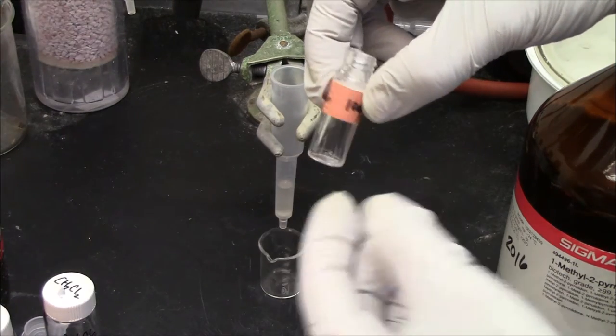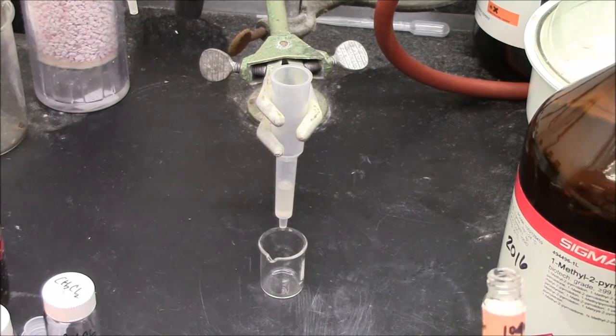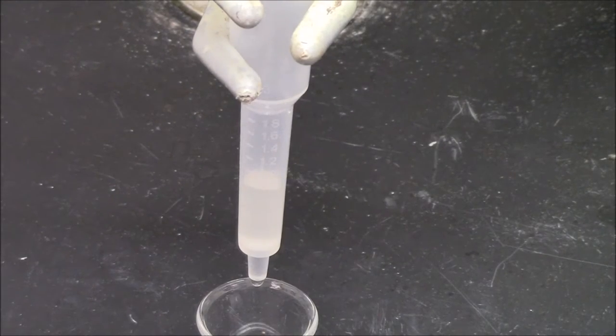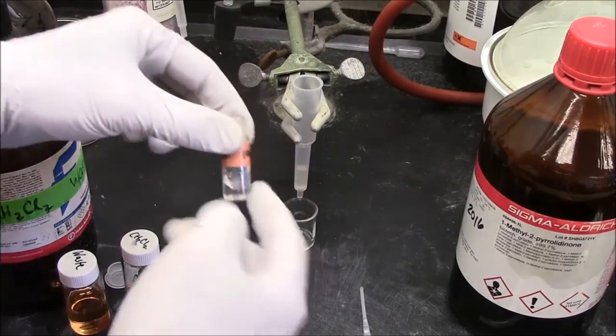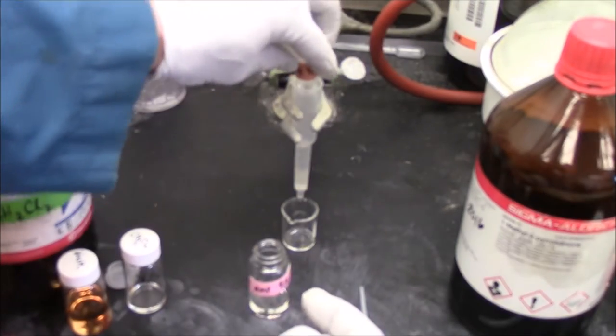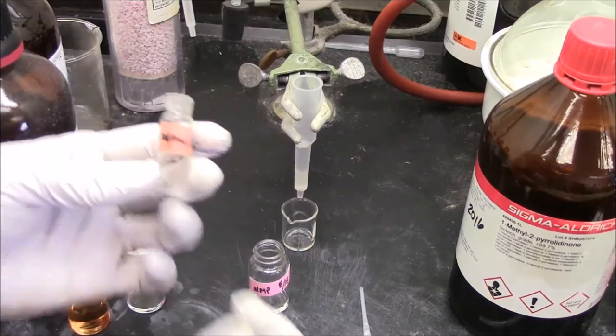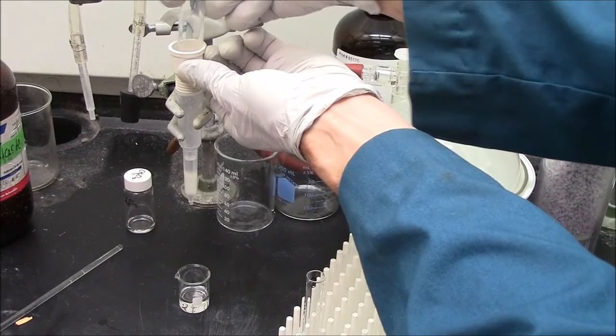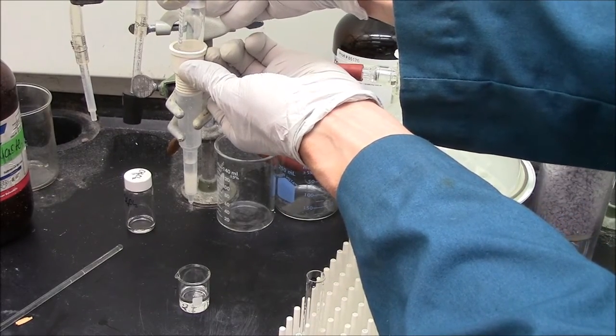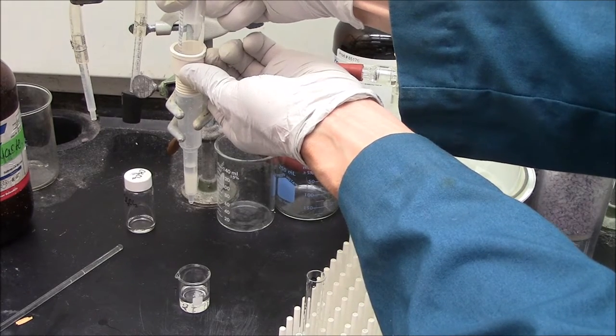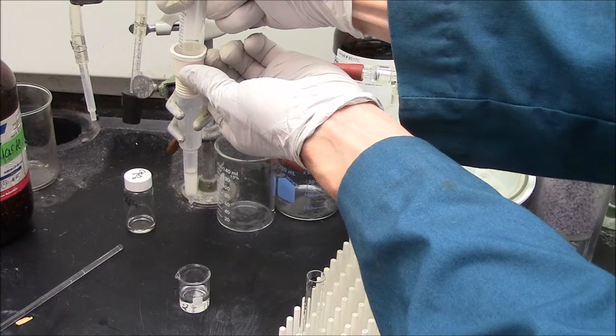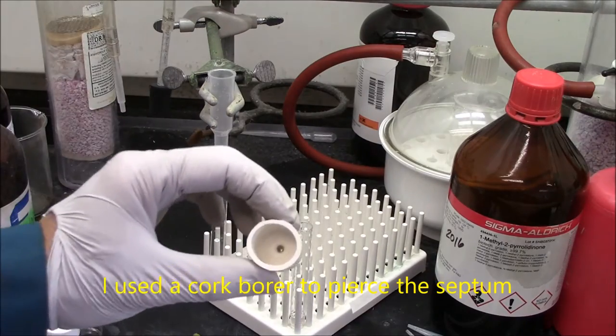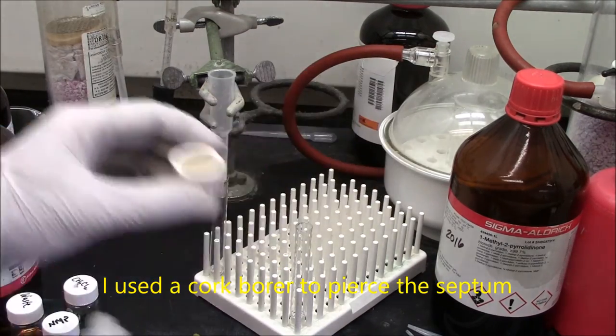I'll then rinse the vial with some NMP to transfer more beads. Here, the solvent is slowly dripping through. I've added a milliliter of NMP to the vial, and I'll dump that in as well. I'm using a 10 ml syringe and a septum to apply gentle pressure to the beads, forcing the solvent out of the column. A septum that I've drilled a hole in there, and I'll put that on top.